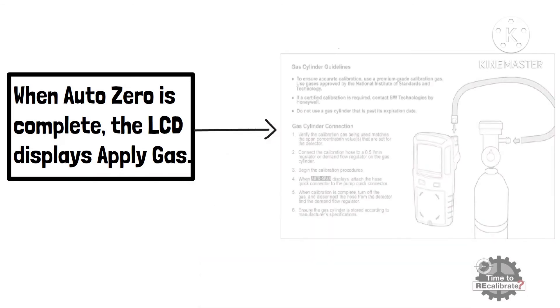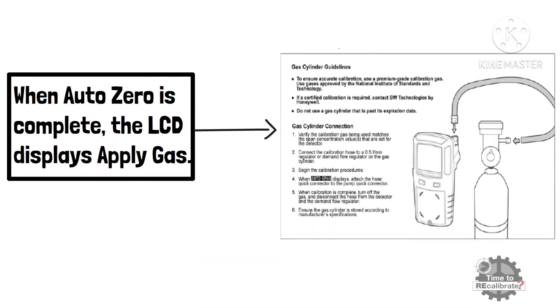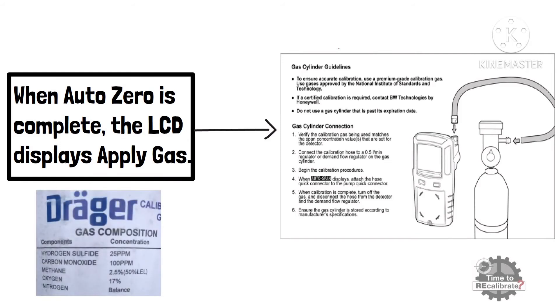Turn on the regulator of mix gas and apply the gas to detector. Make sure that you apply correct concentration gas to device. For example, if the device is set for 25 ppm of H2S, 17% volume of oxygen, 100 ppm of carbon monoxide and 50% of methane, then apply this concentration gas to device.